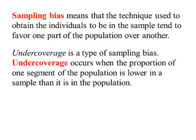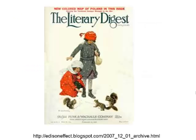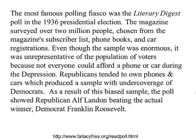Undercoverage is a type of sampling bias. Undercoverage occurs when the proportion of one segment of the population is lower in a sample than it is in the population. A very famous case is the Literary Digest back in 1936. The magazine surveyed over two million people chosen from its subscription list, phone books, and car registrations. Even though the sample was large, it was unrepresentative of voters because not everyone could afford a phone or a car during the Depression. Republicans tended to own phones and cars, producing a sample with undercoverage of Democrats. As a result, the poll showed the Republican candidate beating the actual winner, Democrat Franklin Roosevelt.